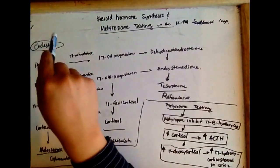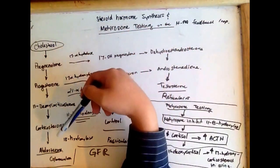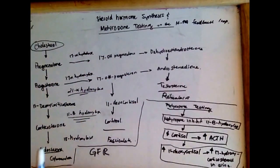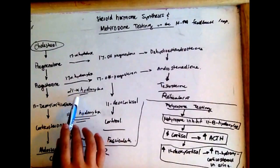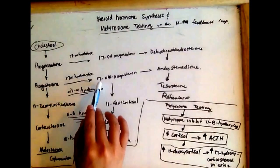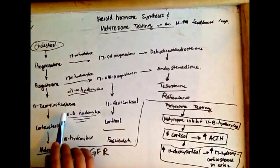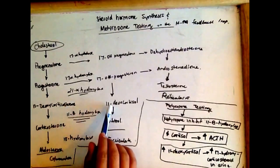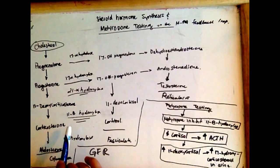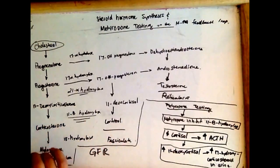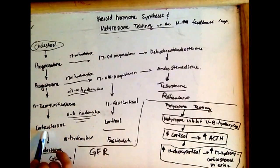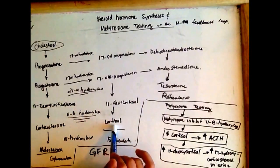Steroid hormone synthesis starts with cholesterol, which is converted to pregnenolone, then to progesterone. Progesterone requires 21-alpha-hydroxylase, which converts progesterone and 17-hydroxyprogesterone into 11-deoxycorticosterone and 11-deoxycortisol. Then 11-beta-hydroxylase converts both 11-deoxycorticosterone and 11-deoxycortisol into corticosterone and cortisol respectively.